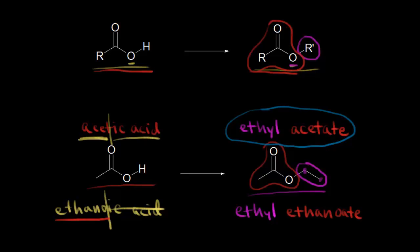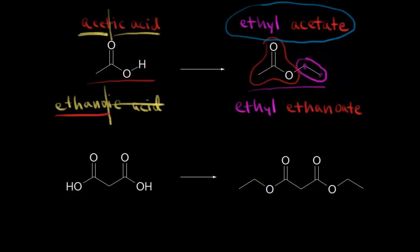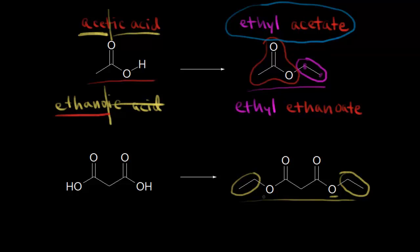Let's go ahead and name another ester. Our goal is to name the ester on the right. We start with the R' group — the one attached to our oxygen. Notice the symmetry: we have another one over here as well. We have two ethyl groups this time, so we're going to write diethyl to start naming our ester.